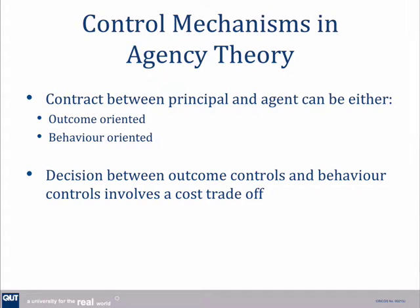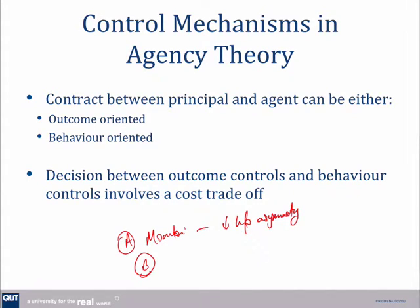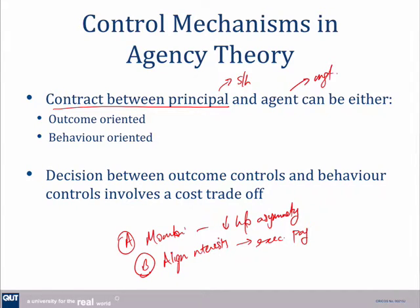So what do we do to control these agency costs? What we try to do is monitor — we monitor in order to reduce that information asymmetry. If we can reduce the information asymmetry, then the agent can't take advantage of it. The second thing we do is look to align the interests, and we do that through contracting — through executive pay. We set up a contract between the shareholders and management and focus on what we as shareholders want management to do, then reward that to align those interests.